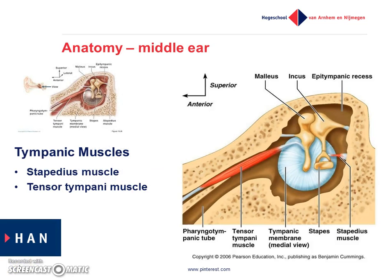Those were the three important tiny little bones, also called the three ossicles: malleus, incus, and stapes. Inside the middle ear there are two more important structures called the tympanic muscles — the stapedius muscle and the tensor tympani muscle. Inside the middle ear you only see the tendons of those muscles; the muscles themselves are hidden inside the bone.